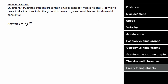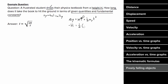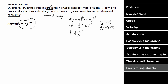What would an example problem involving freely flying objects look like? A student drops a book from height h — how long does it take to hit the ground, expressed in terms of given quantities and fundamental constants? We use a kinematic formula symbolically: delta y is negative h (dropped downward), initial velocity is zero, and vertical acceleration is negative g, where little g is positive 9.8 m/s². Solving for time gives the square root of 2h over g — our symbolic answer in terms of given quantities and fundamental constants.